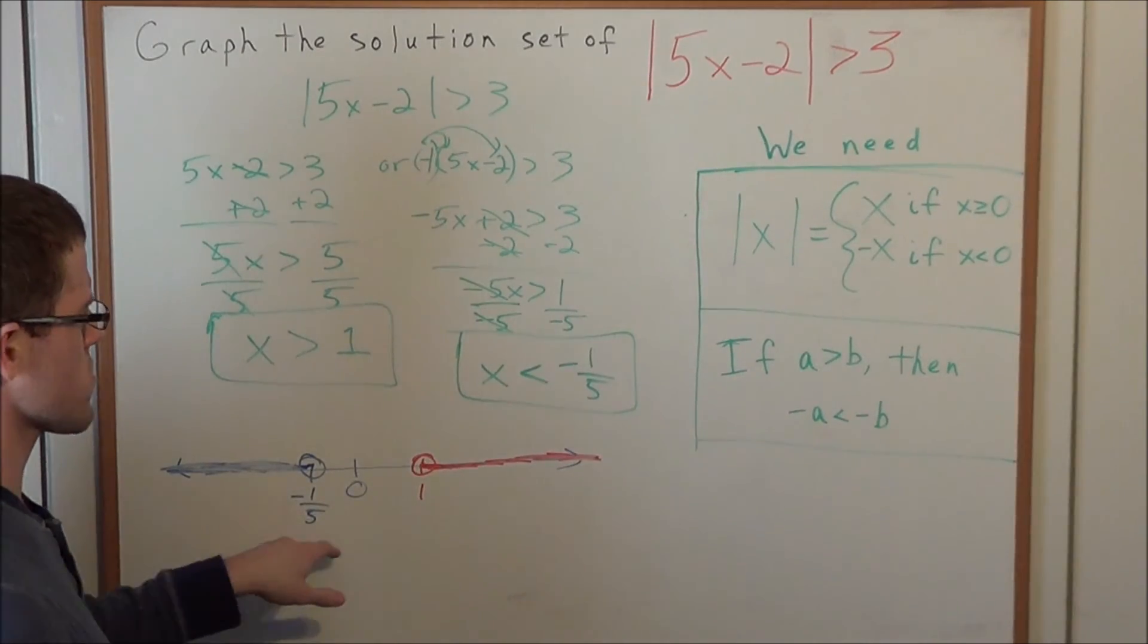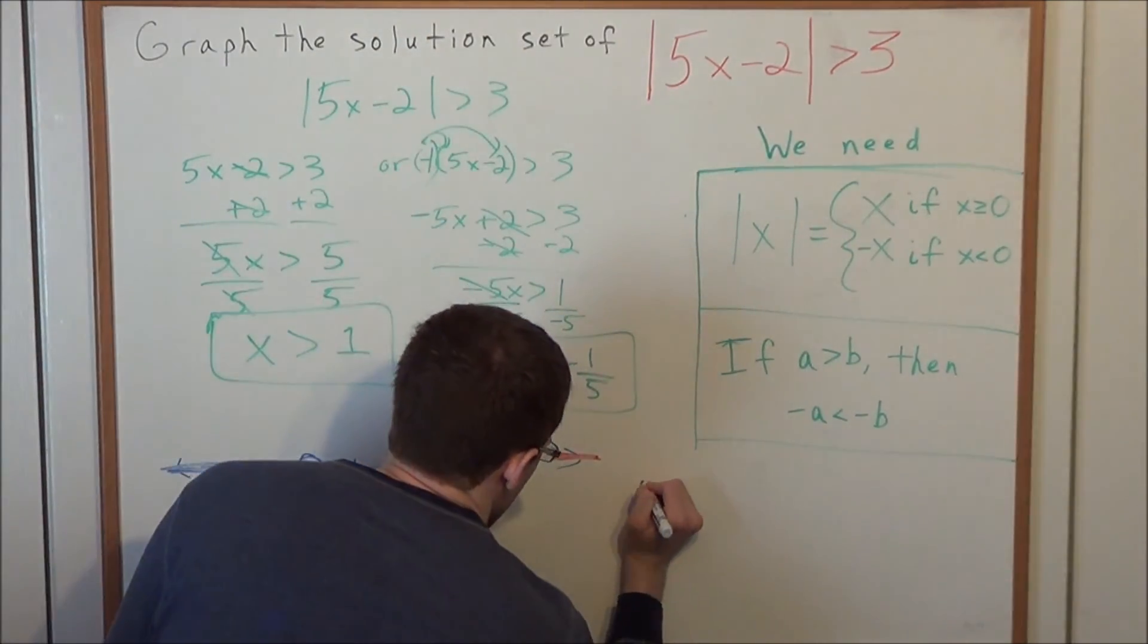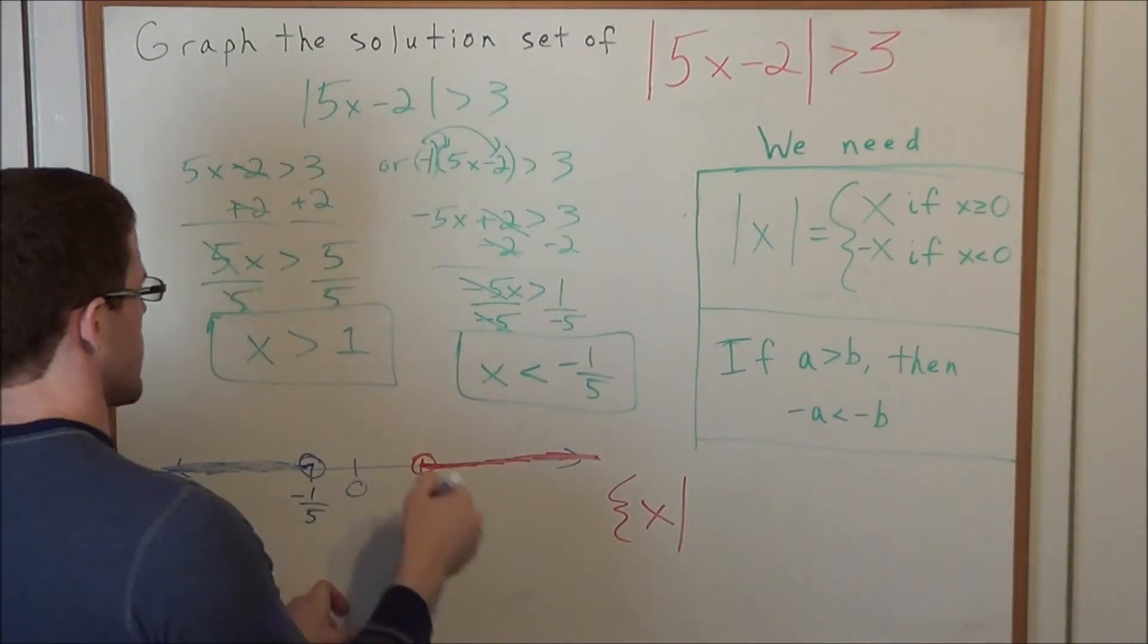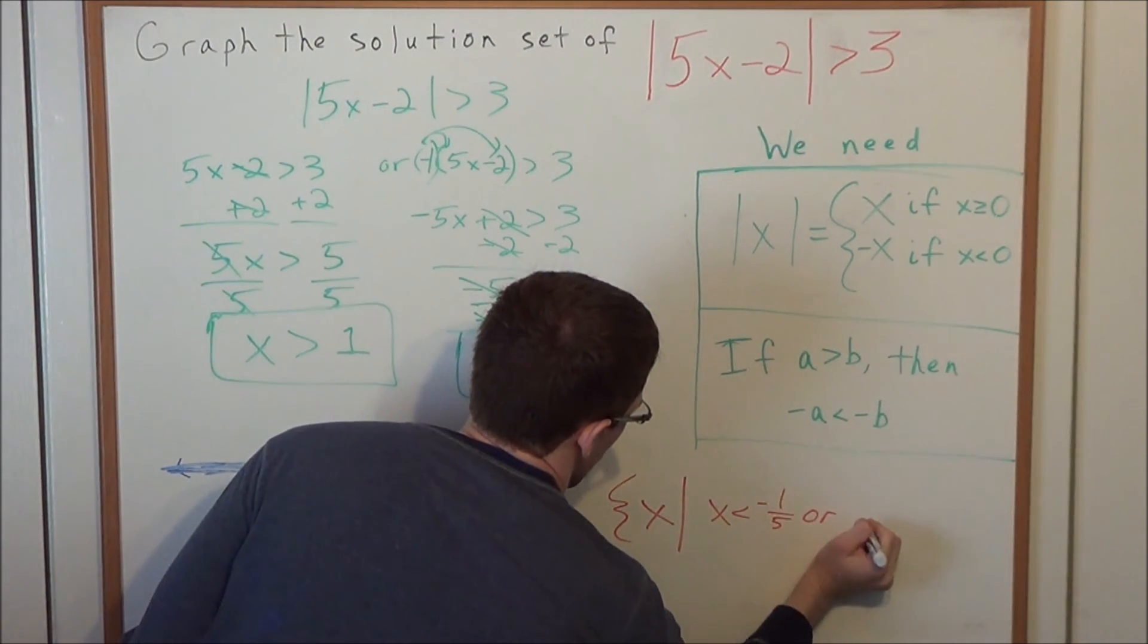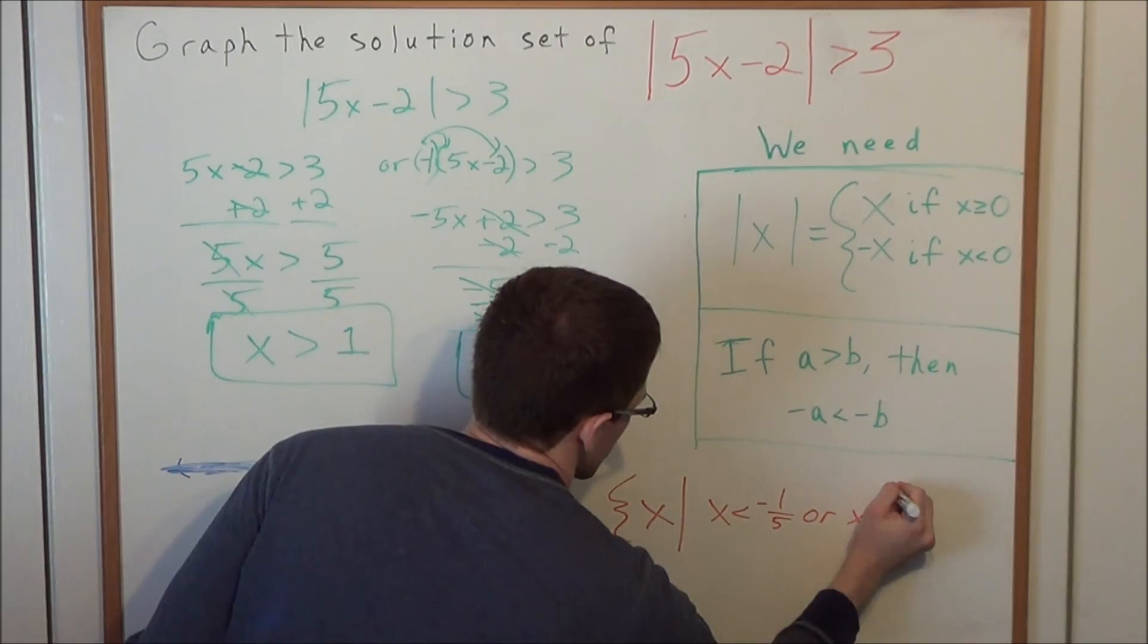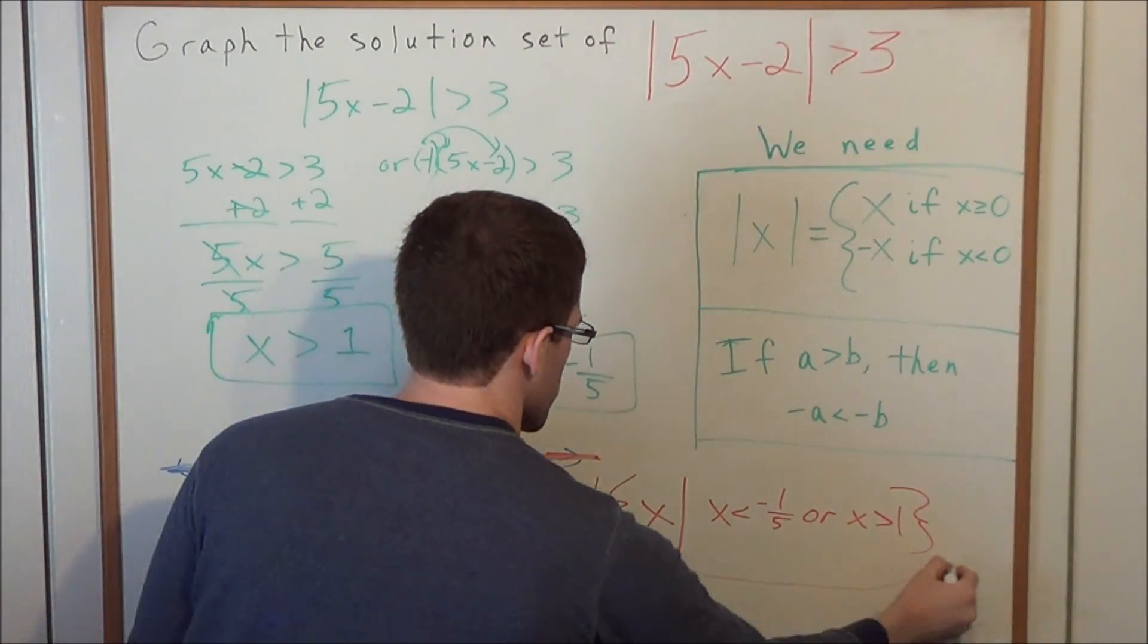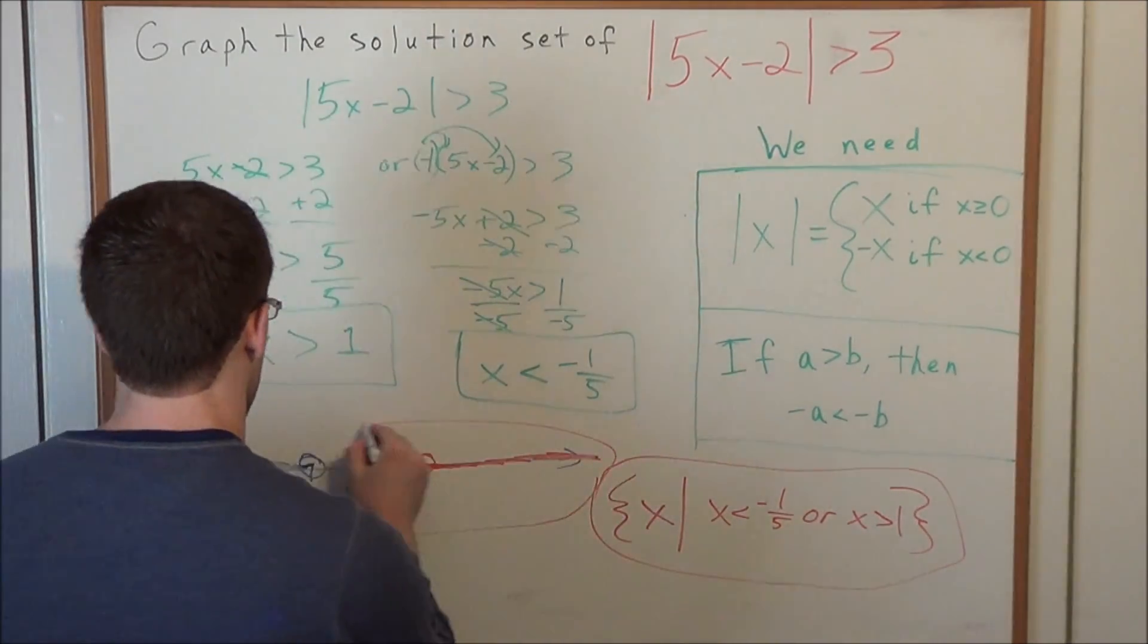And this would be a graph of our solution set. If they wanted set builder notation, we would say that the solution to this would be all x values, such that, and we would have x is less than negative one-fifth, or x is greater than positive 1, and close the brackets. So these two forms here would sufficiently represent the problem that we just solved.